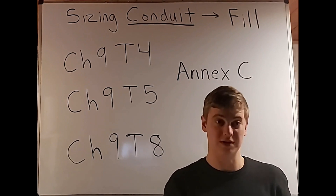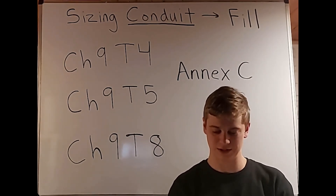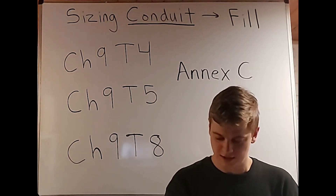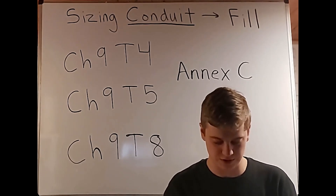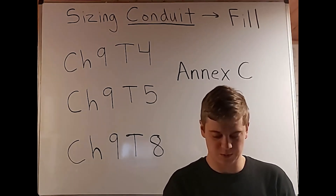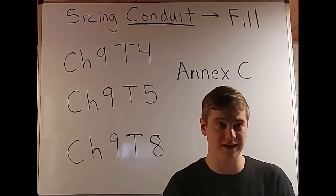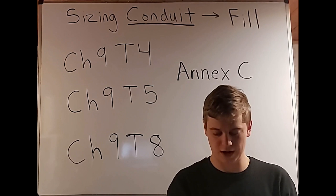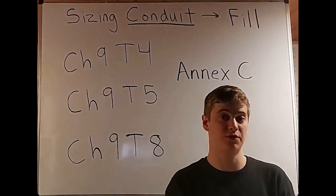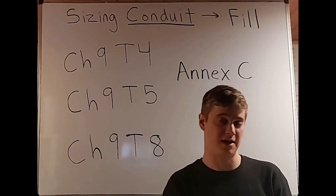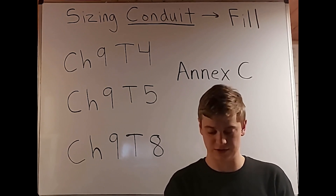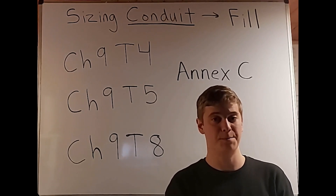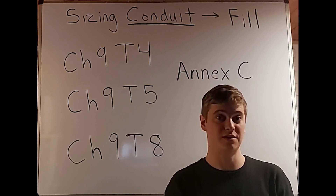I'm going to read from the codebook now, but I'm not going to read the entire thing because of plagiarism. When we go to Chapter 9 in the codebook, we see Table 1, and that is the percentage of the cross-section of conduit and tubing for conductors and cables. On the left side, we have the number of conductors and/or cables. If we have one conductor or cable, we have a demand factor of 53%, so we're going to be multiplying the area by 0.53.